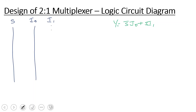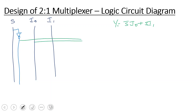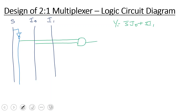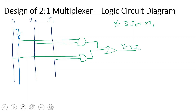The circuit consists of a NOT gate for S-bar, then S-bar and I0 going into an AND gate, and S and I1 going into another AND gate. This is the OR gate combining both. So Y equals S-bar times I0 plus S times I1 — a very simple circuit and easy to understand. This is the multiplexer concept and design of the 2-to-1 MUX. The next video covers the 4-to-1 MUX design.